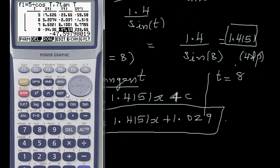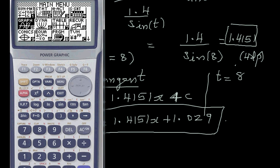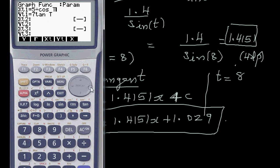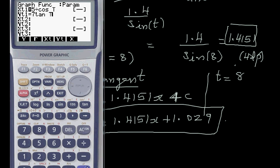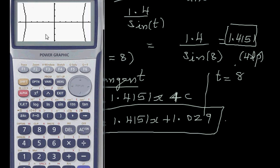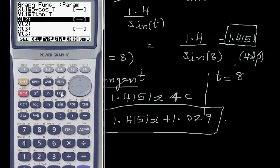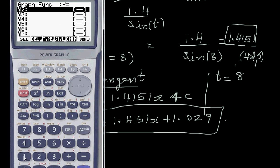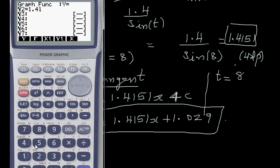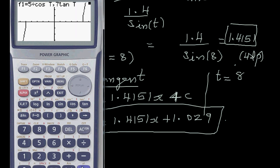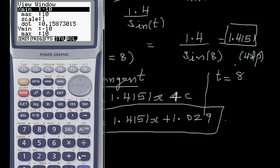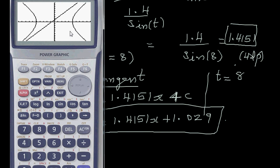You can confirm this on the graphic calculator. Go to graph, draw the parametric curve — this produces a hyperbola. Then enter y2 = 1.4151x + 1.029 and draw it. Making the scale a bit bigger, you can see clearly that this line is tangent to the hyperbola at the point corresponding to t = 8. Hopefully this video has been helpful.